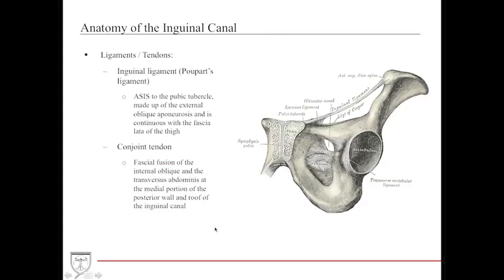Before discussing the fine details of the canal, let's first discuss some of the ligaments and tendons. The first is the inguinal ligament, also called Poupart's ligament, which attaches from the ASIS to the pubic tubercle and creates the inferior border of the inguinal canal. It is composed of the external oblique aponeurosis and is continuous with the fascia lata of the thigh.